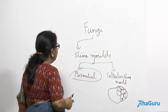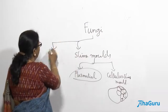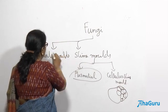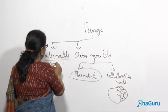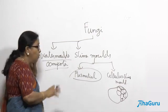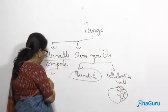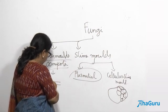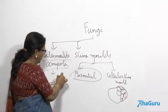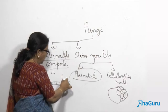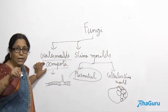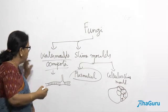Apart from slime molds, there is one more group of fungi-like protists known as water molds, otherwise known as Oomycota. They actually look more like fungus because they have a mycelium like that found in fungi — they have a mycelium and they produce sporangia. But they are different from fungi.